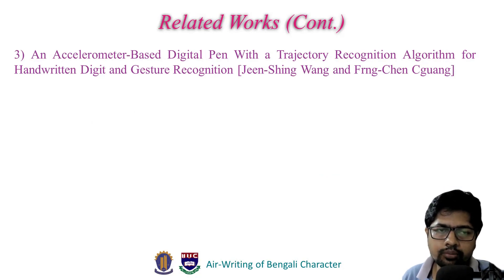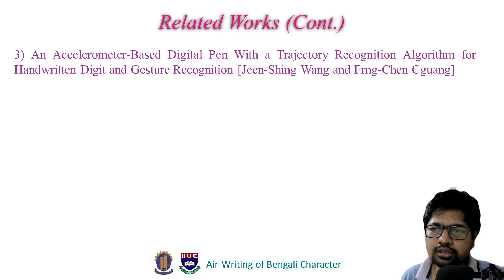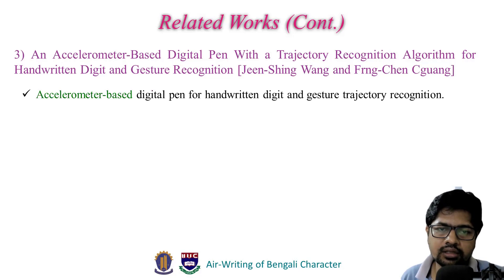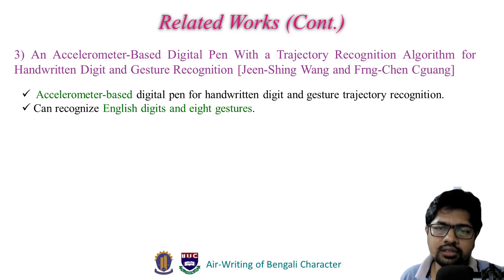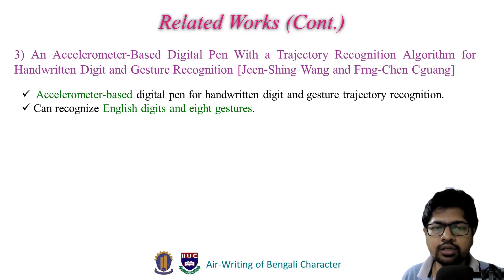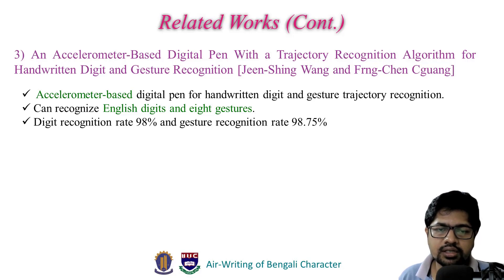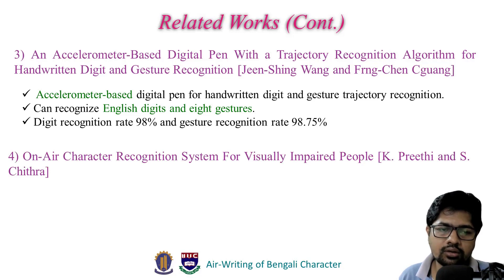Jinxing Wang et al. proposed an accelerometer-based digital pen with a trajectory recognition algorithm for handwritten digit and gesture recognition. It is an accelerometer-based digital pen for handwritten digit and gesture trajectory recognition, capable of recognizing English digits and eight gestures. This work is also similar to ours. This model can recognize English digits and gestures, and our model can recognize Bengali characters. The digit recognition rate is 98% and gesture recognition rate is 98.75%.